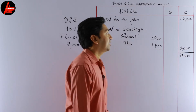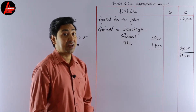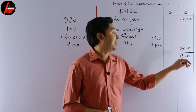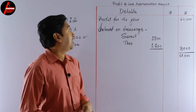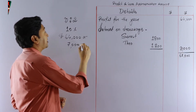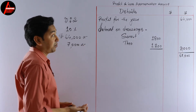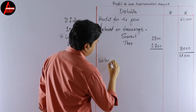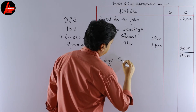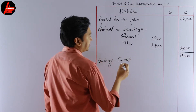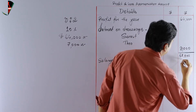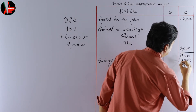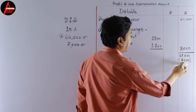Now we write the expenses and subtract them from the total incomes. The first expense is salary — Sumit receives a salary from the business of $7,000. We write $7,000 in the outer column, which will be subtracted from the $67,000 total income.